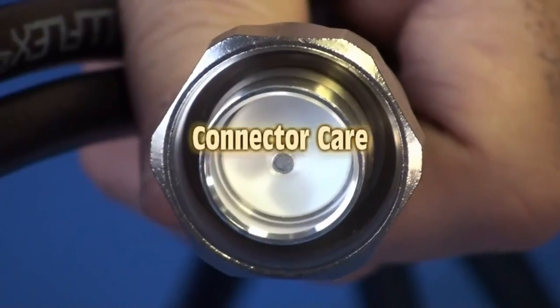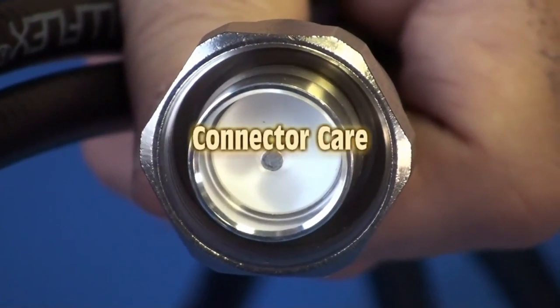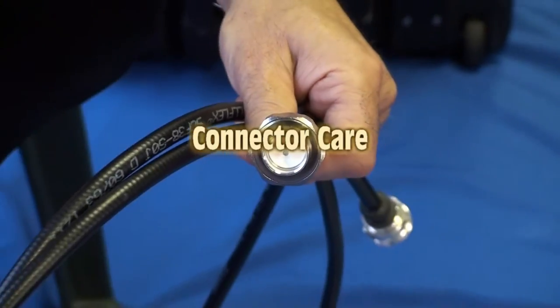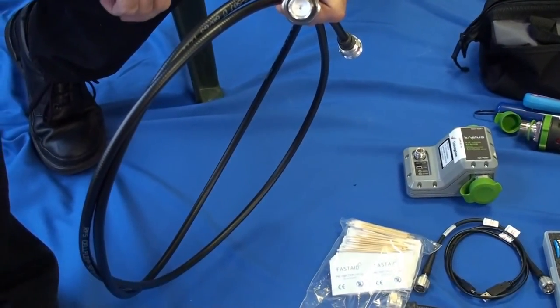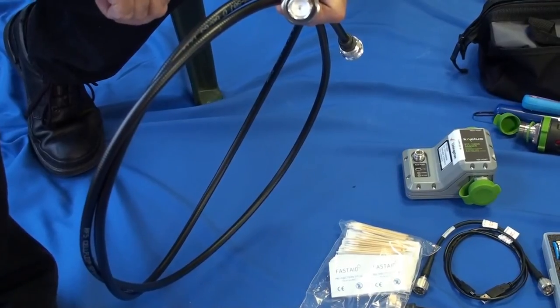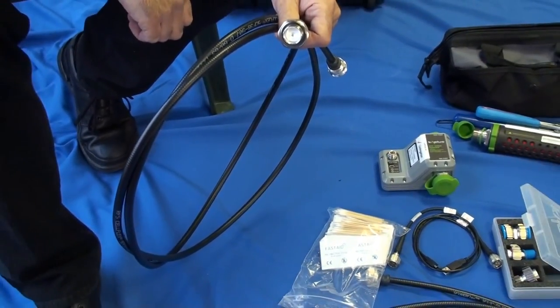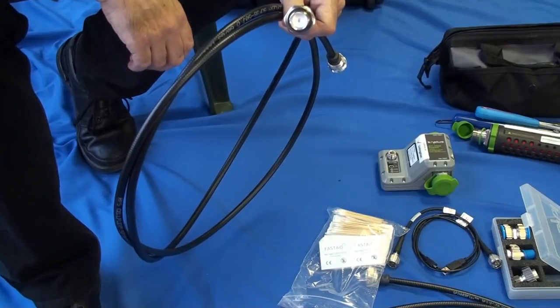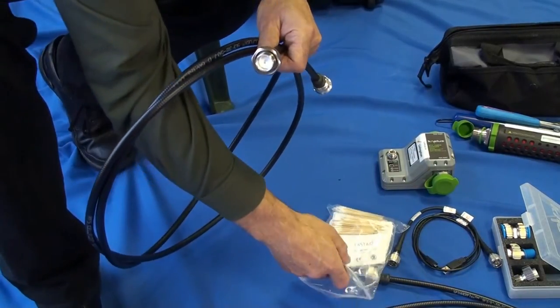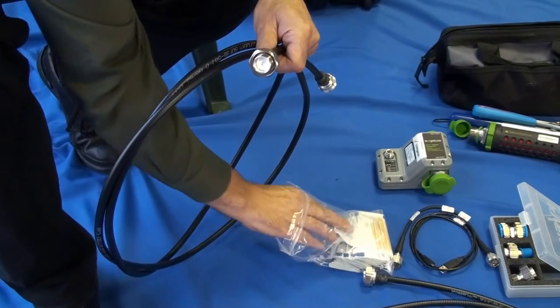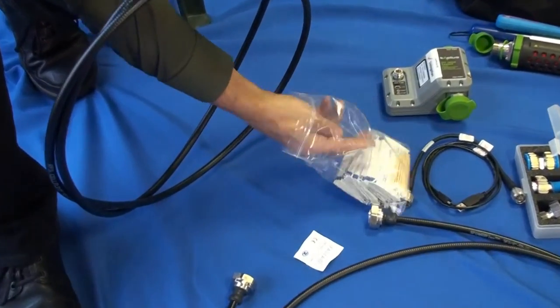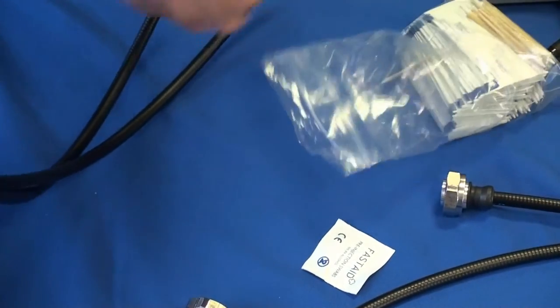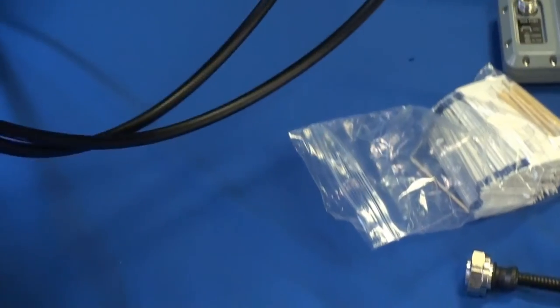For PIM measurements, connector care and cleanliness is very, very important. When you connect and disconnect 716 connectors, little pieces of metal can come from the threads and get into the RF path of the connector. So we provide a cleaning kit which consists of simply alcohol wipes and cotton buds for cleaning the inside of a connector. It's very straightforward.